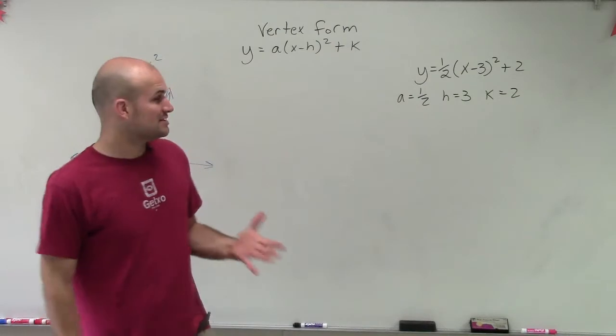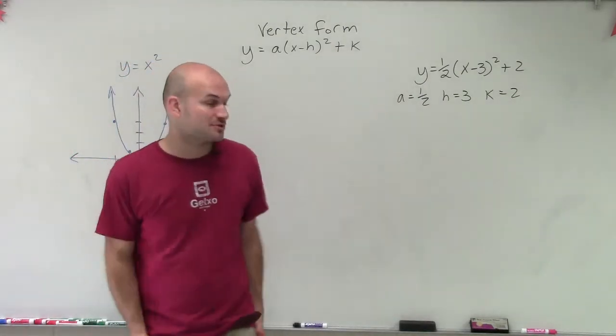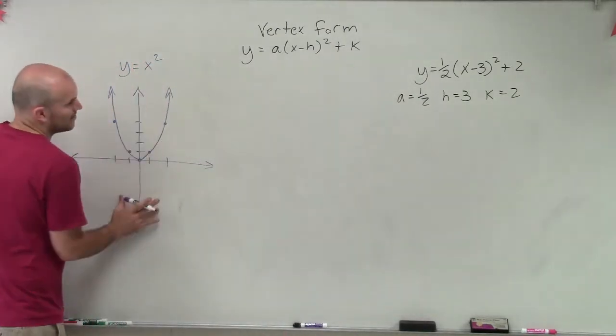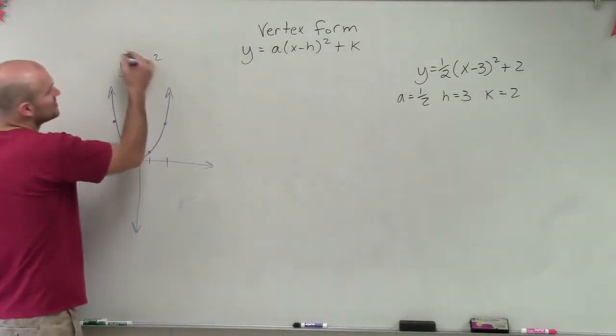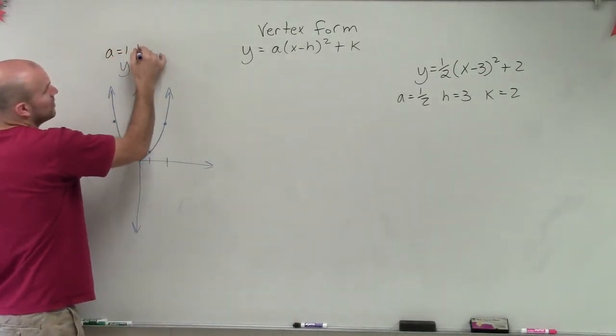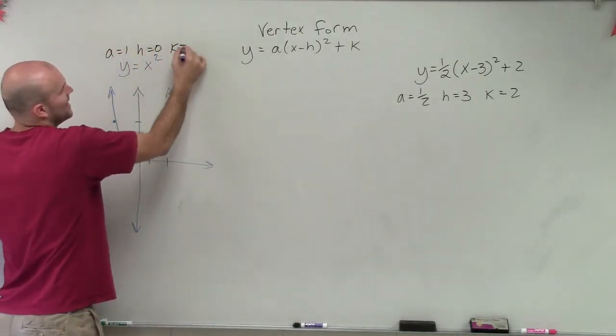So remember, when we have all these values, we need to understand what each one of them is going to do to our parent graph. In this parent graph, you can see that a equals 1, h equals 0, and k equals 0.